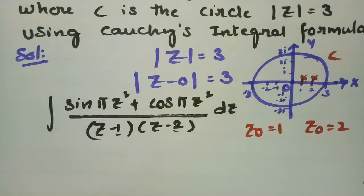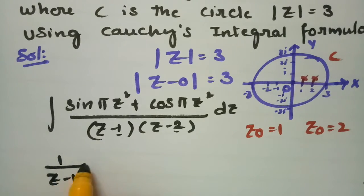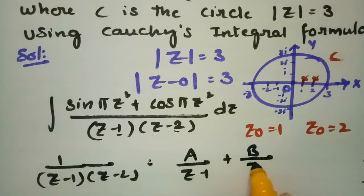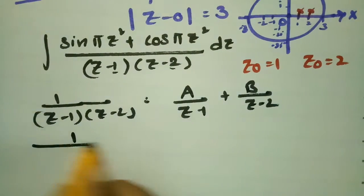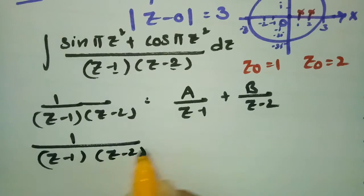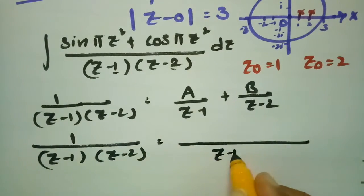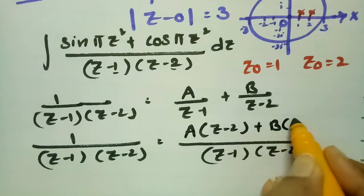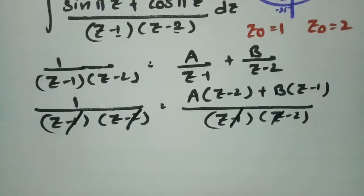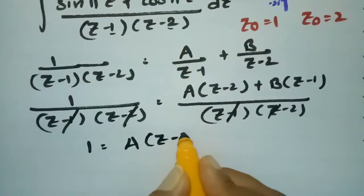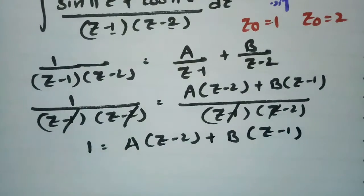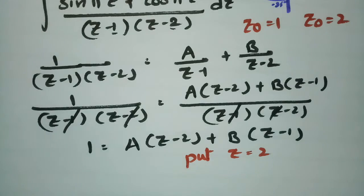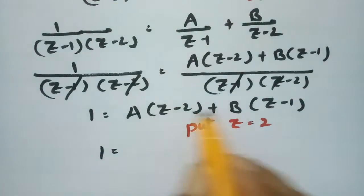Before applying the formula, I need to resolve 1/[(z−1)(z−2)] into partial fractions: 1/[(z−1)(z−2)] = A/(z−1) + B/(z−2). Taking LCM and cross-multiplying gives 1 = A(z−2) + B(z−1). Substituting z = 2 gives 1 = B(2−1), so B = 1.